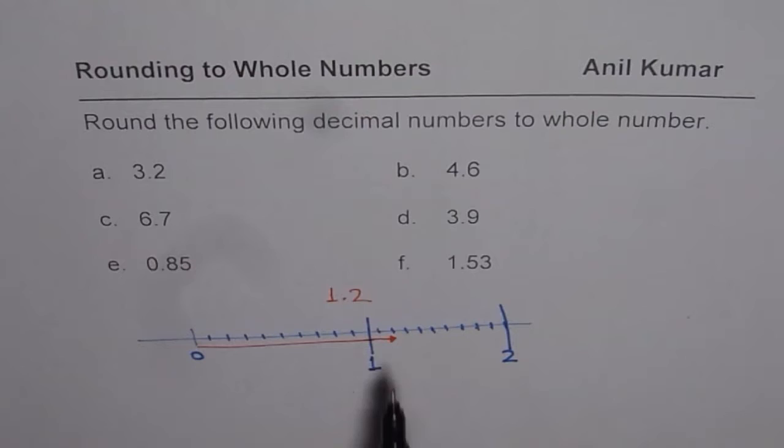When we are saying rounding to whole numbers, that means we have to round to these numbers. So you need to check whether you are closer to 1, that is 1 whole, or to 2 wholes. Well, clearly, you are closer to 1. So we will round this to 1. Do you see that?